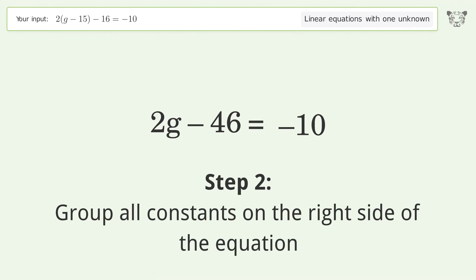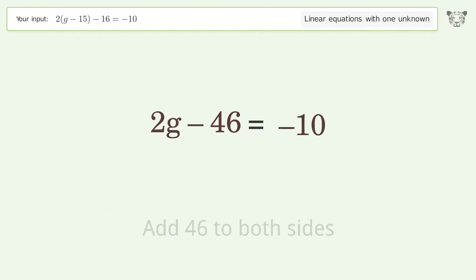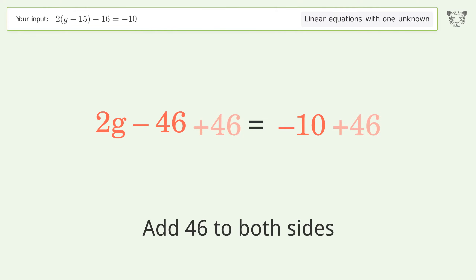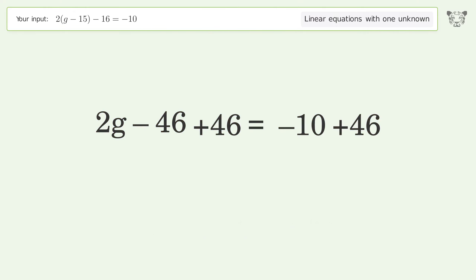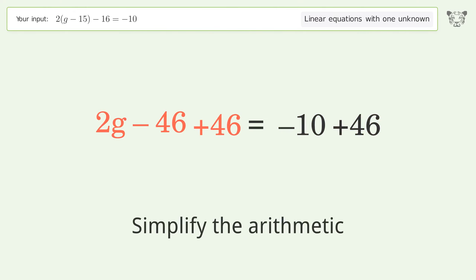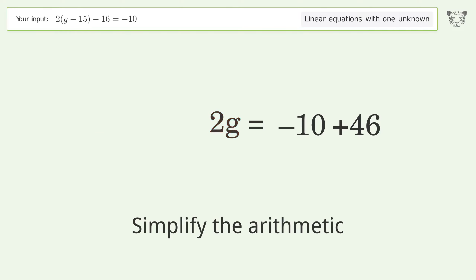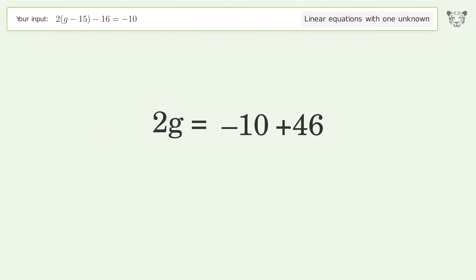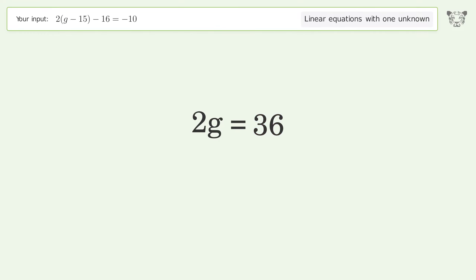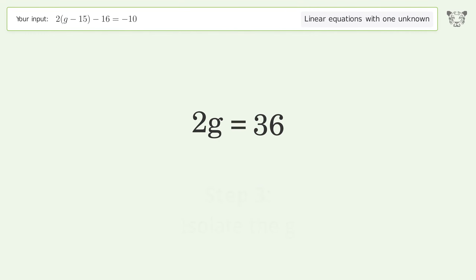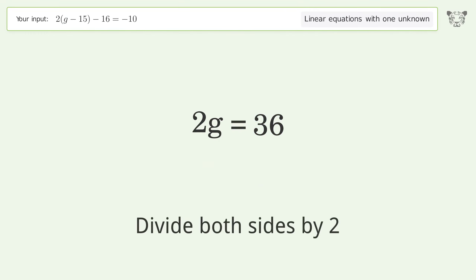Add 46 to both sides of the equation and simplify the arithmetic. Then isolate g by dividing both sides by two.